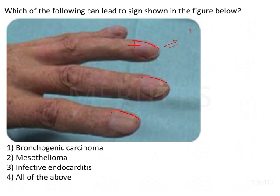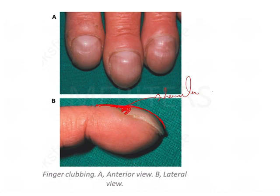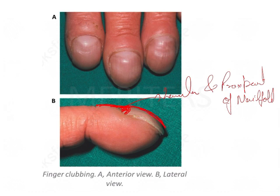This particular condition is clubbing. To explain it more clearly: the proximal part of the nail fold, the nail plate, and the lunula — this semicircular structure — form a measurable angle. When you try to merge these lines, you will see a loss of the angle between the lunula and the proximal nail fold. The nail pad is also quite convex. This is clubbing.